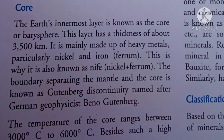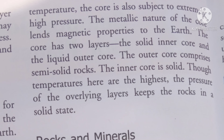The temperature of the core ranges between 3,000 to 6,000 degrees Celsius. Besides such high temperature, the core is also subject to extremely high pressure. The metallic nature of the core lends magnetic properties to the Earth. The core has two layers: the solid inner core and the liquid outer core. The outer core comprises semi-solid rocks, while the inner core is solid.